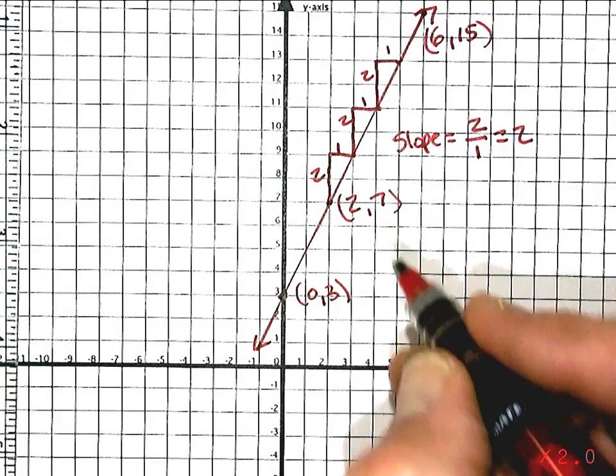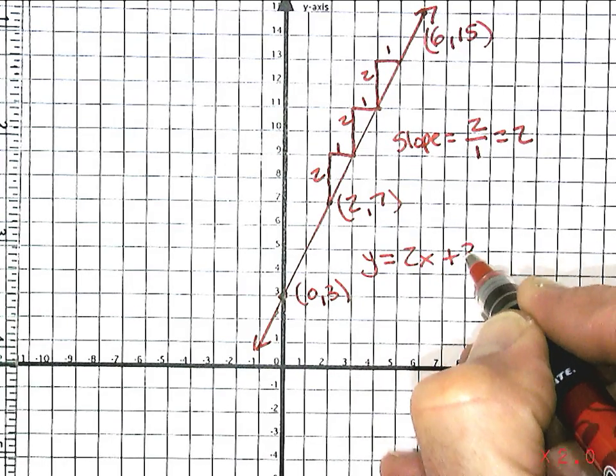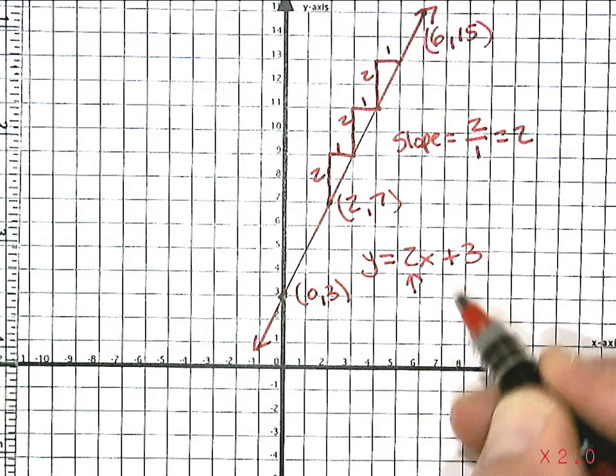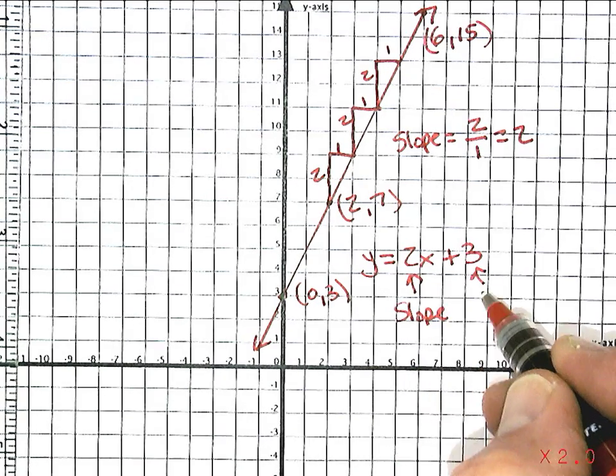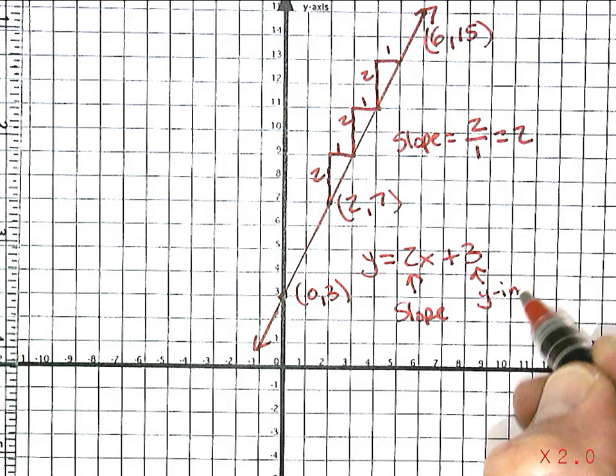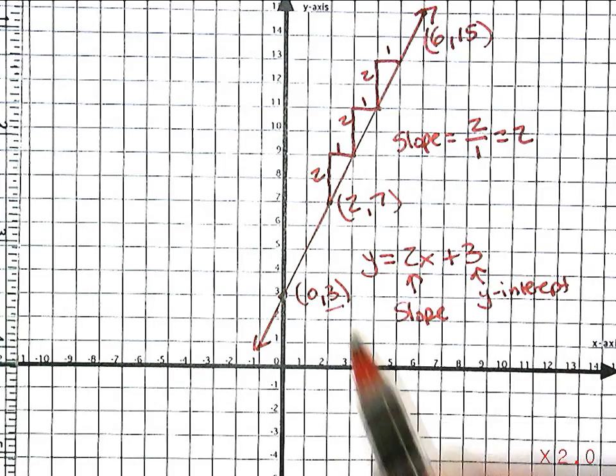So the equation should be y equals 2x plus 3. The slope is 2, and the y-intercept is 3, right from that spot there.